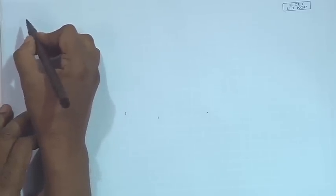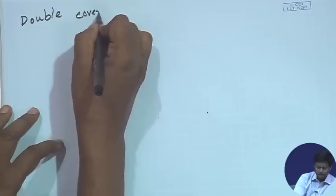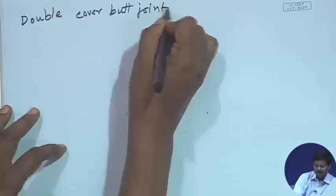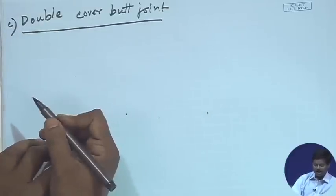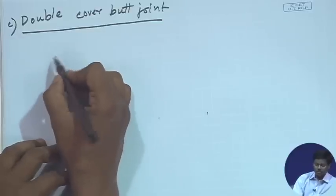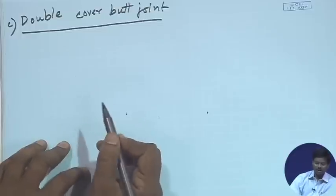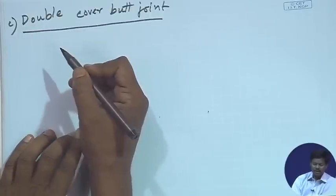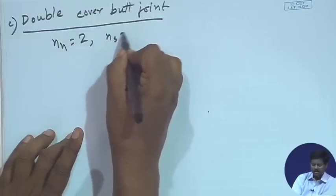For Case C — double cover butt joint — the bolt is in double shear. We assume threads are in both shear planes, so n_n = 2 and n_s = 0. We must also account for a packing plate since the plates have different thicknesses (18 mm and 10 mm), creating an 8 mm gap. Since 8 mm > 6 mm, a reduction factor β_pkg must be applied.